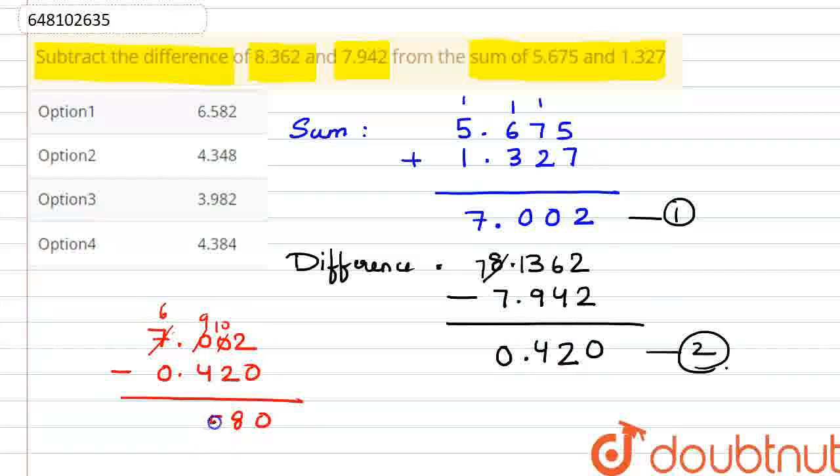9 minus 4 is 5. 6 minus 0 is 6. And this was our 2. 2 minus 0 is 2. So here we have our 6.582.